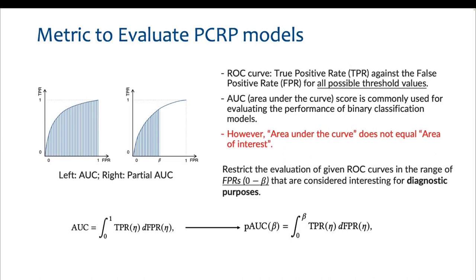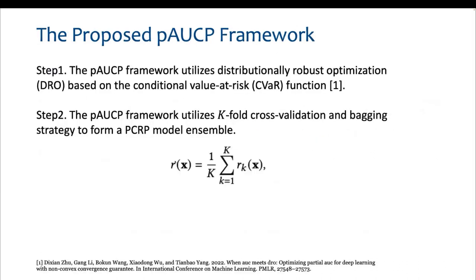Therefore, we propose to use partial AUC instead of full AUC for a more focused evaluation within a specific FPR range from zero to beta. Furthermore, we propose a framework named PAUC-P to optimize partial AUC performance of PCRP models during model training, and use cross-validation and bagging strategy to form a PCRP model ensemble.